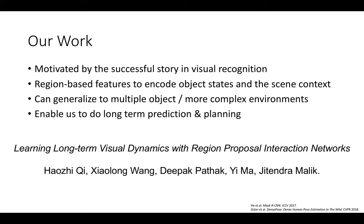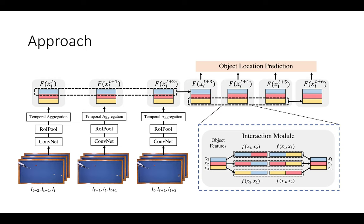Our work is done by Haozhi, Deepak, Yi, and Jiteng. Our approach pipeline has three main components. The first is the visual encoder, which extracts object-centric representations for each object. Given these representations, we perform interaction reasoning. Then, given the updated representations after interaction, we use them to perform final prediction on the location of each object in the future.